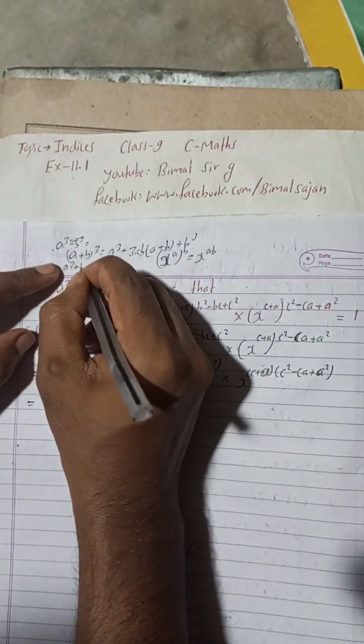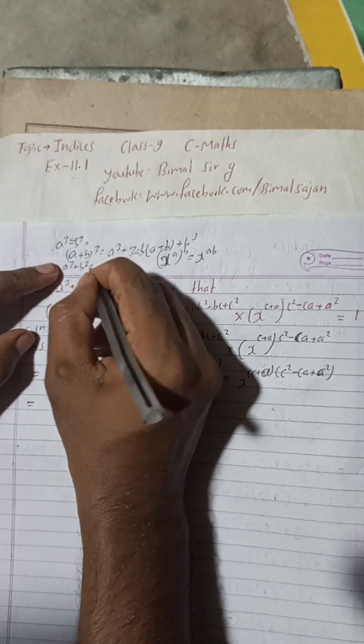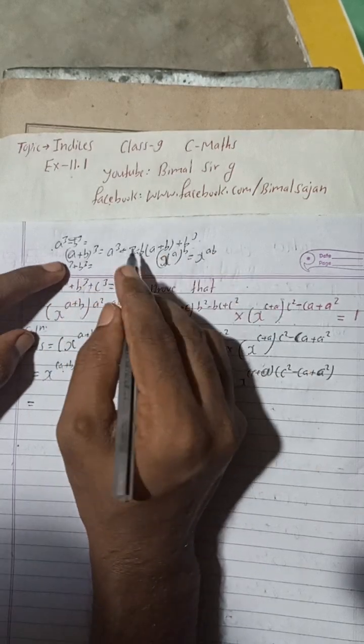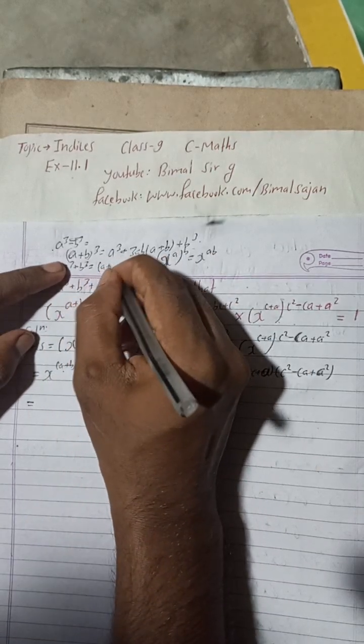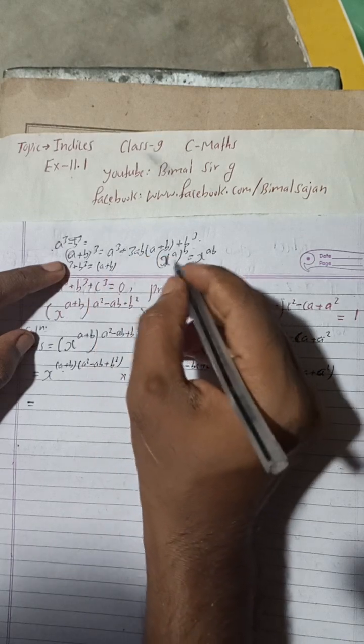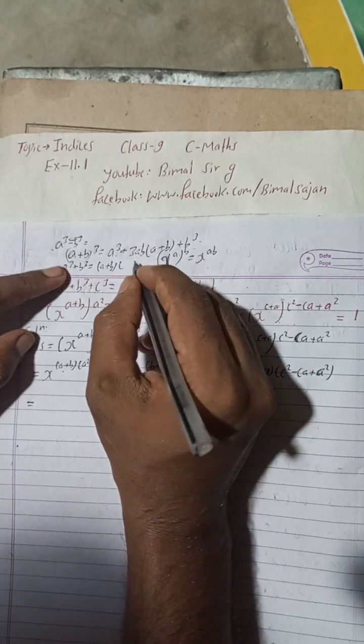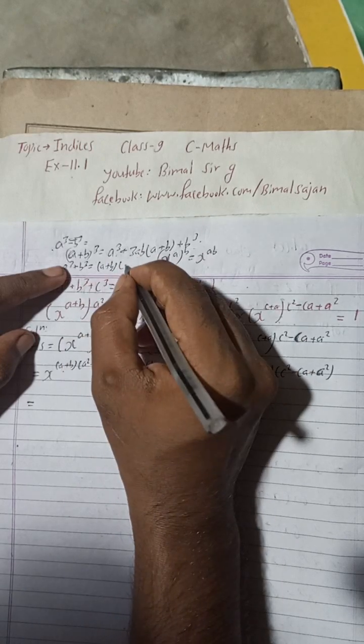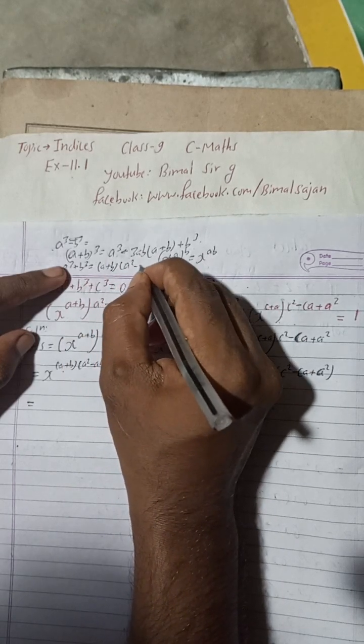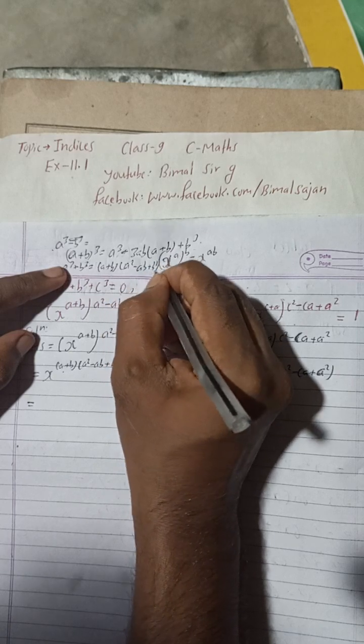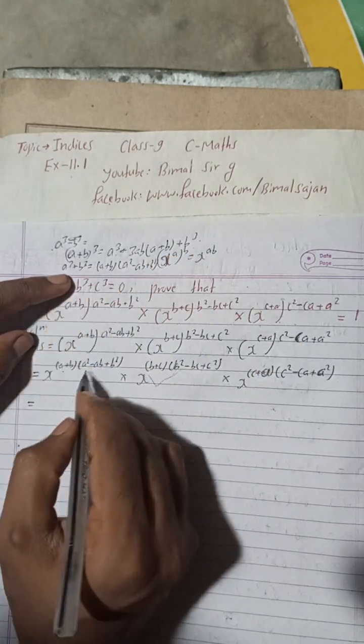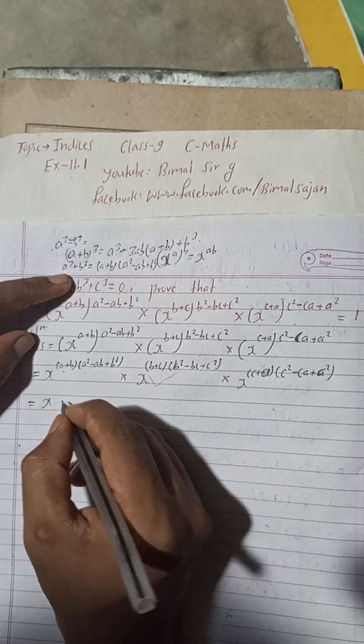So a³+b³ formula will be, you see, a³+b³ formula will be here (a+b) into, this side, so this will be (a+b) into (a²-ab+b²). Okay, so this is the formula for a³+b³.